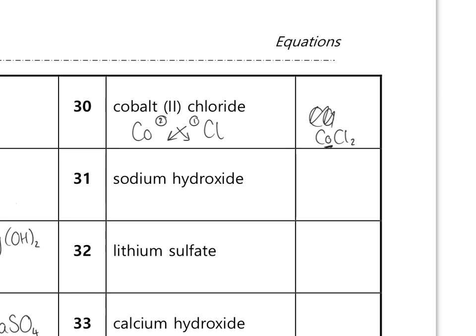Back to examples with molecular ions: sodium hydroxide. Na for sodium (group one, valency one); hydroxide is OH⁻ (valency one). Swap and drop, ignoring the ones, gives NaOH. Lithium sulfate is Li₂SO₄.